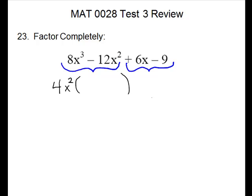So first we have 4, we want 8, we're missing a 2. We need another x to get x cubed. We have 4, we want a negative 12, so a minus 3, and we already have the x squared outside. So that group is done.